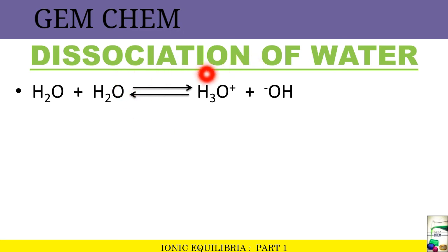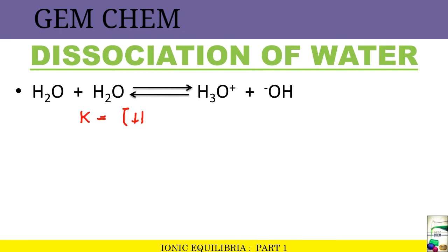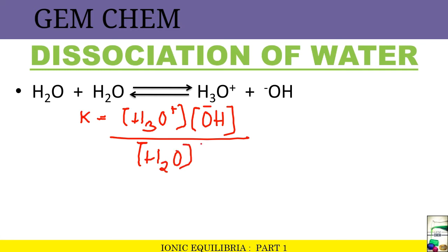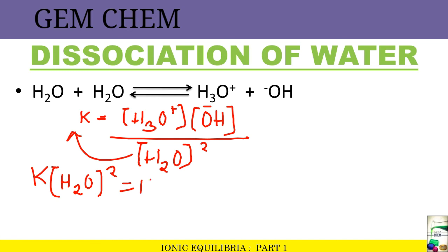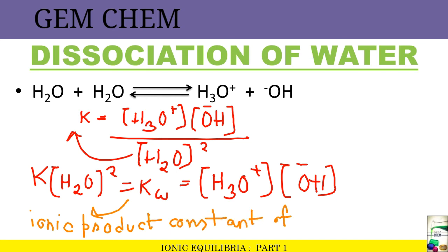Now, what is Kw? We learn it from the dissociation of water. Two molecules of water dissociate to give H₃O⁺ and OH⁻. The equilibrium constant gives K·[H₂O]² = Kw = [H₃O⁺][OH⁻]. This relation is true for any aqueous medium, and Kw is known as the ionic product constant of water, or water dissociation constant.